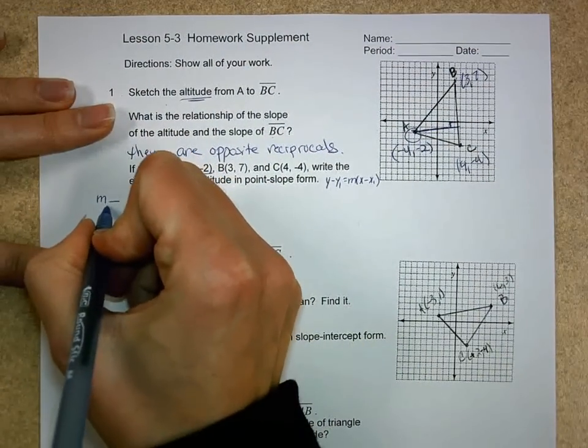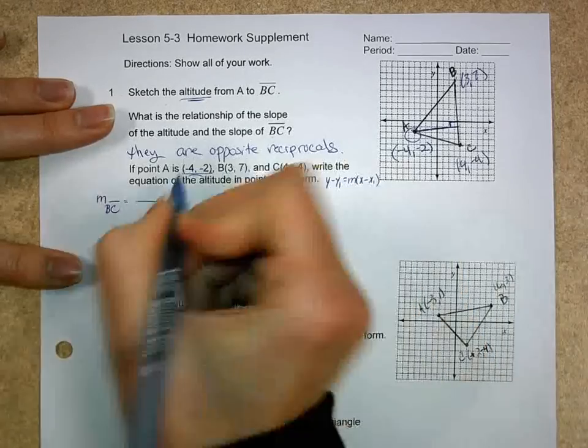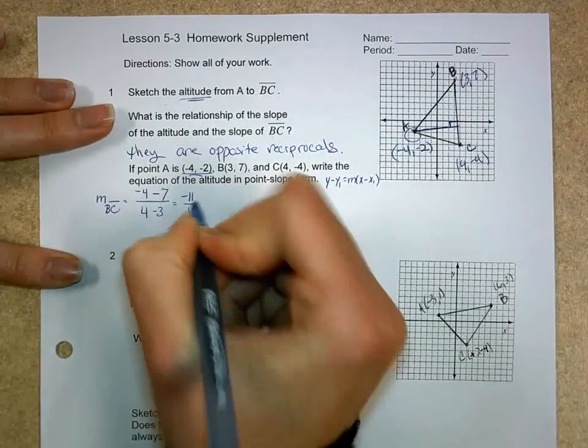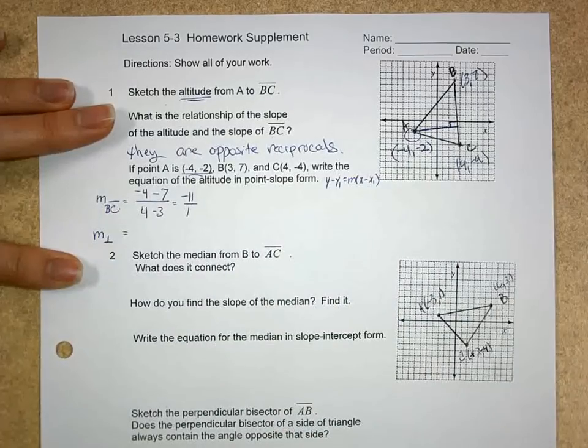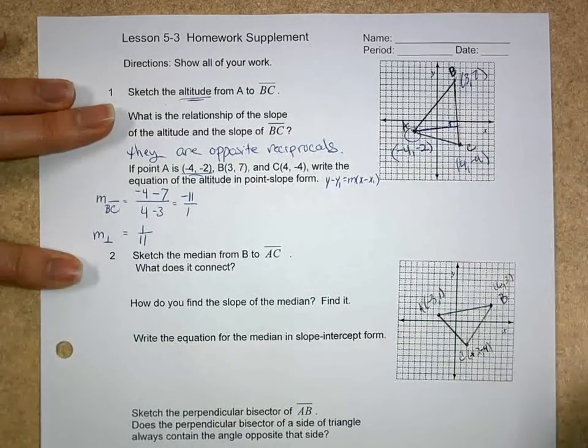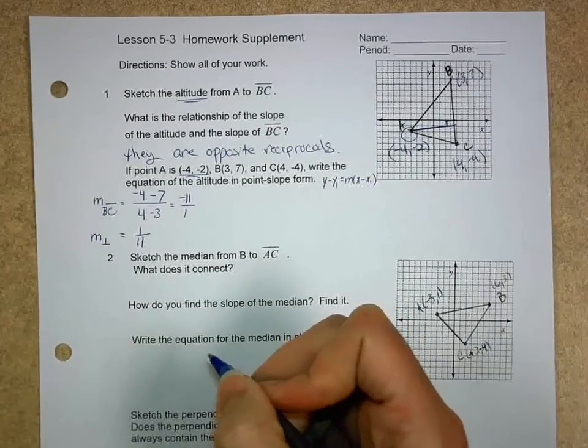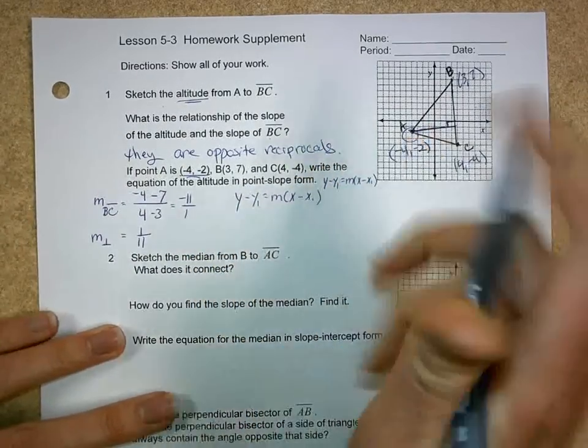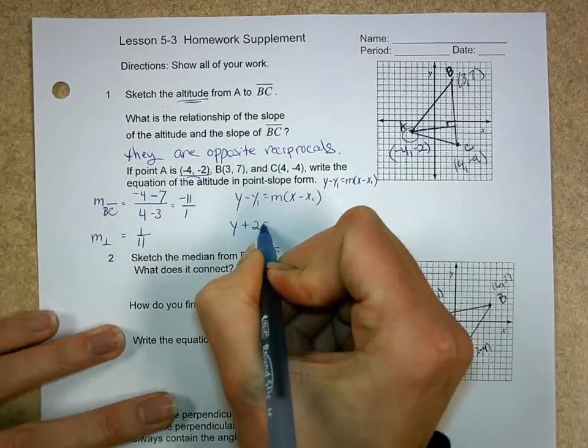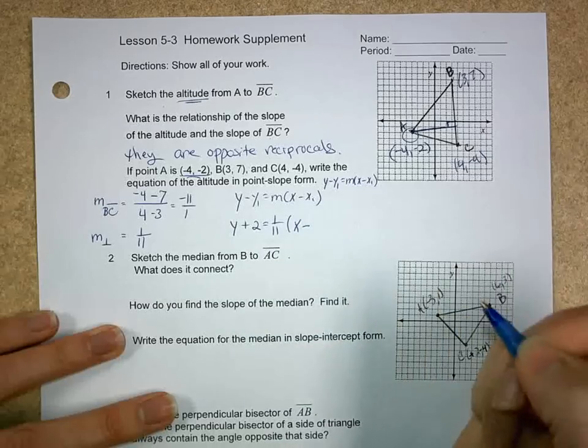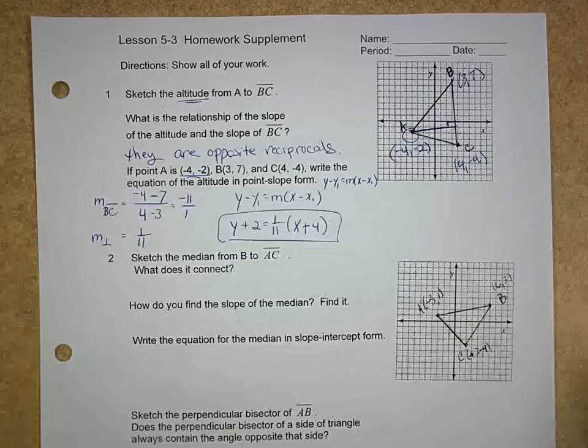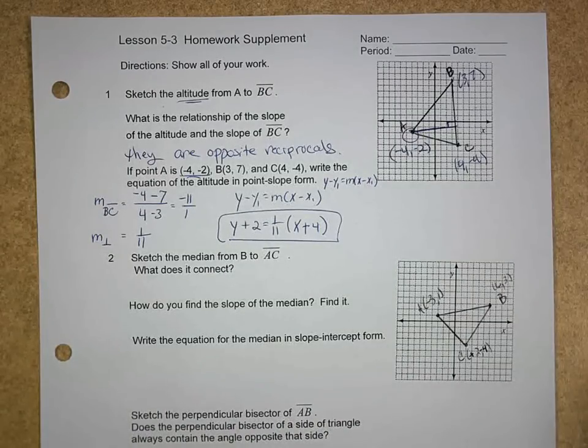The slope of segment BC, the change in y over the change in x, so -4 minus 7 over 4 minus 3. That's -11 over 1. But I want the slope that's perpendicular, so I want the opposite reciprocal, so that's 1 over 11. Then I'm going to plug it into my point-slope form using the point of the altitude I do know, point A. So that's y minus a negative 2, so that's plus 2, equals the slope of 1/11 times the quantity x minus a negative 4, so that makes that a positive 4. There we have the equation of the altitude. Not difficult if we apply what we've already known from Chapter 3, equations of lines.